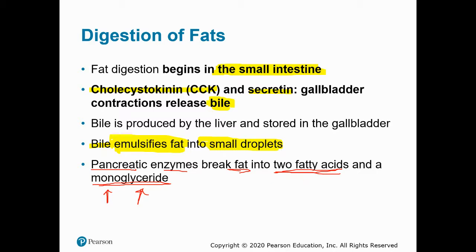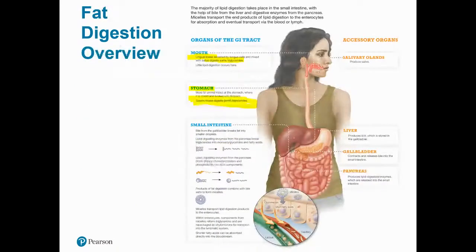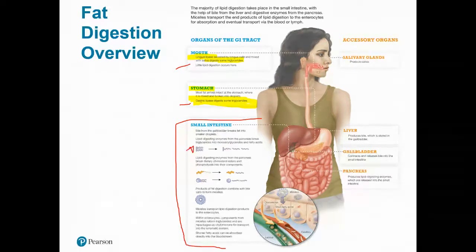In the pancreas, we have pancreatic lipases that break fat down into its building blocks — two fatty acids and a monoglyceride. Remember, a triglyceride is a glycerol and three fatty acids. The final stage of fat digestion yields two separated fatty acids, and that third fatty acid stays attached to the glycerol, which we call a monoglyceride.